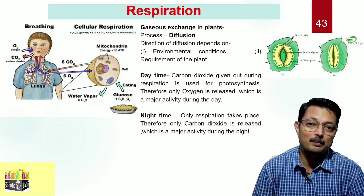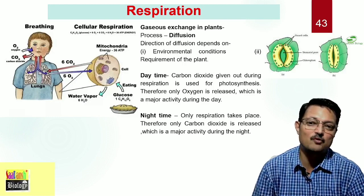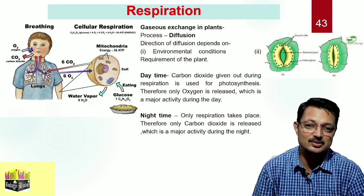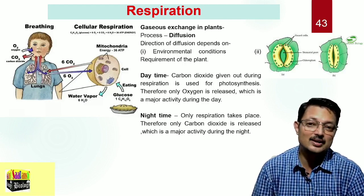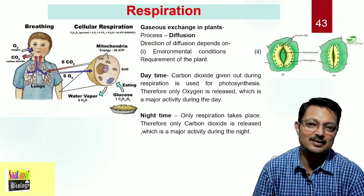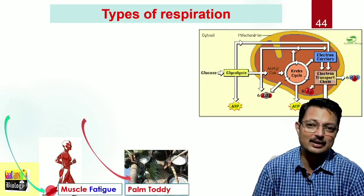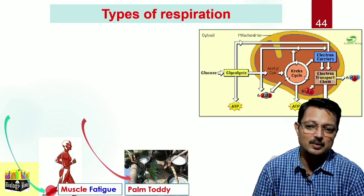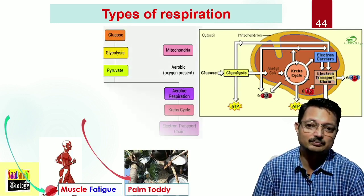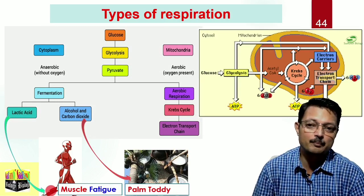During daytime, the carbon dioxide given out during respiration is used for photosynthesis by the plant, so the plant releases oxygen during daytime. But during nighttime, there is no photosynthesis going on, so respiration results in release of carbon dioxide — hence sometimes you are advised not to sleep under a tree during nighttime. We can classify respiration into two types based on whether it involves complete breakdown of glucose into carbon dioxide and water.